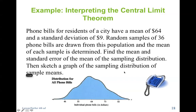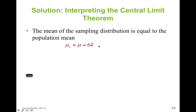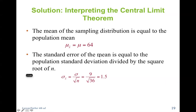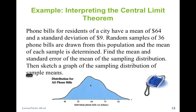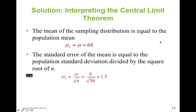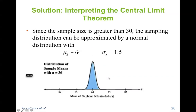Phone bills for residents of a city have a mean of 64 and a standard deviation of 9. Random samples of 36 phone bills are drawn and the mean of each sample is determined. Find the mean and standard error of the mean of the sampling distribution, then sketch a graph. The mean of the sample means is also 64. The standard error is 9 divided by the square root of 36, giving 1.5. Since the sample size is greater than 30, the sampling distribution can be approximated by a normal distribution with mu equal to 64 and standard deviation of 1.5.